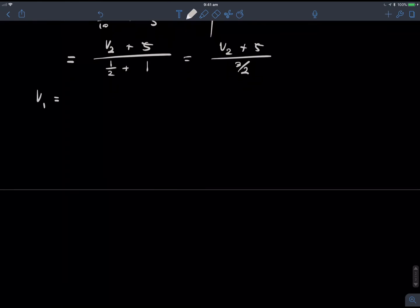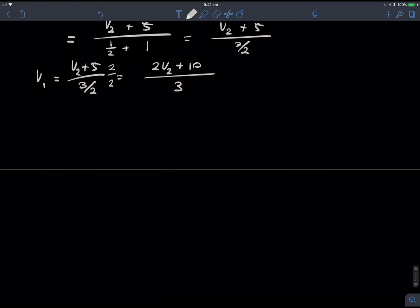I'll just write that again. V1 is V2 plus 5 on 3 halves. I might even put that as 2V2 plus 10 on 3. That's probably a better way to put it. I don't have any fractions on the denominator there. So, all I've done is just times by 2 on 2, which is the same as timesing by 1 there. Okay. So, we've got V1.